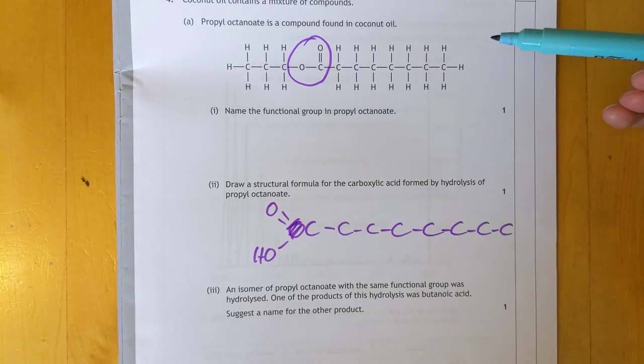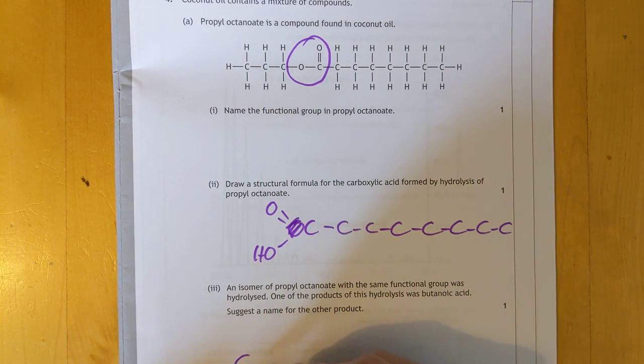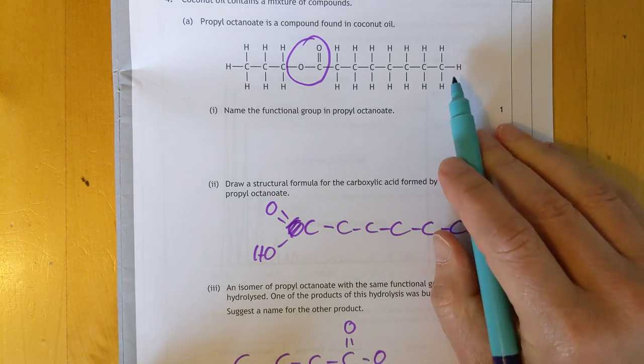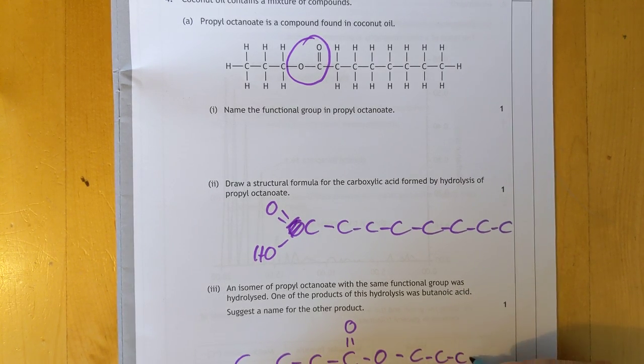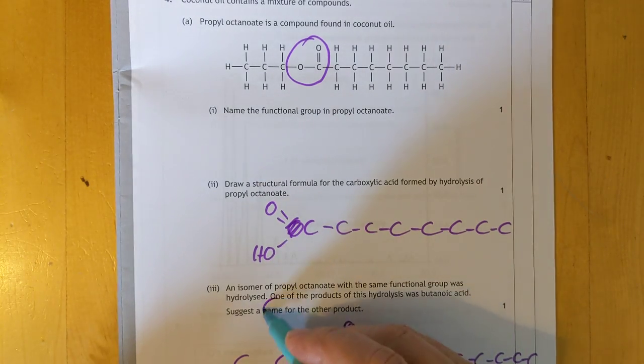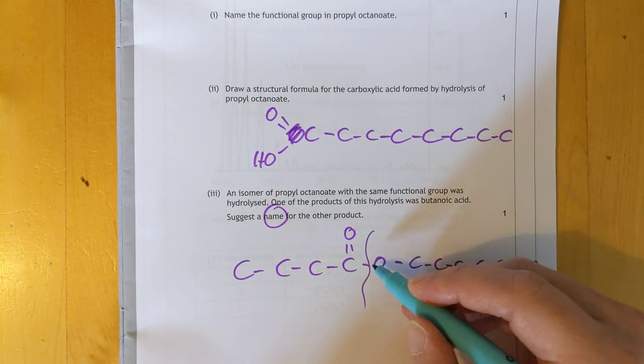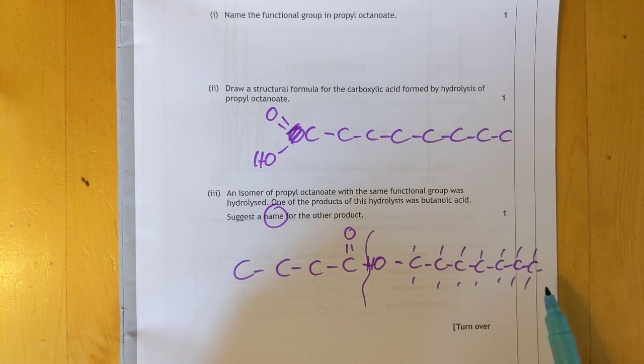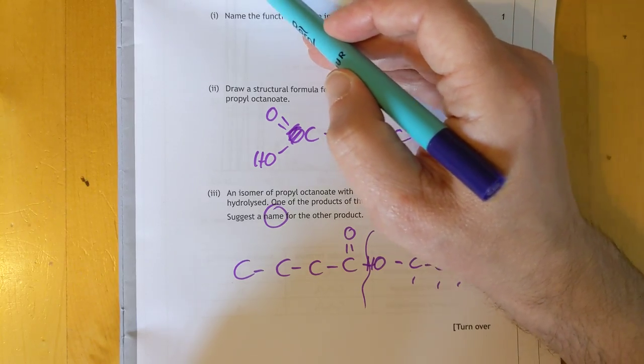An isomer of this with the same functional group was hydrolyzed. One of the products was butanoic acid. So we just rejig these carbons so that four of them are used in the butanoic acid side. So that would be the butanoate. One, two, three, four, five, six, seven, eight, nine, ten, eleven. So, if you use four here, you've got seven on the other side. One, two, three, four, five, six, seven. I don't know why I'm drawing this. It's the name of it, you fool. Obviously, that's heptan-1-ol. I don't think you'll get it for heptan-ol. I think you would need heptan-1-ol, guys, for that higher level.